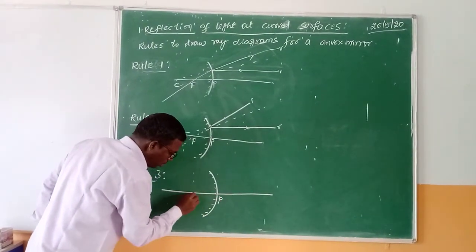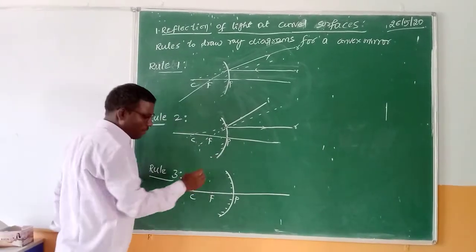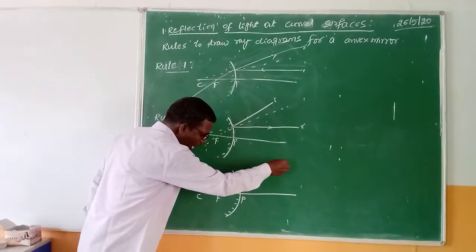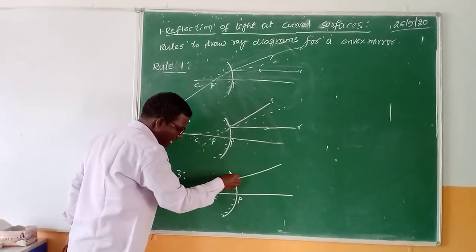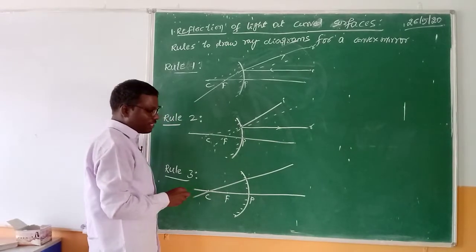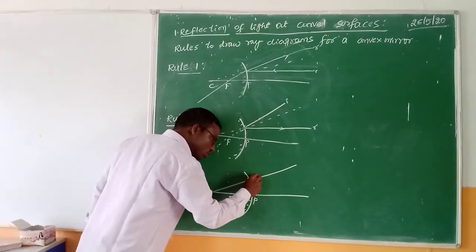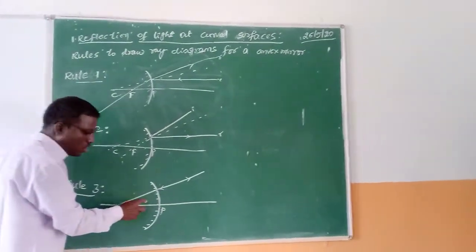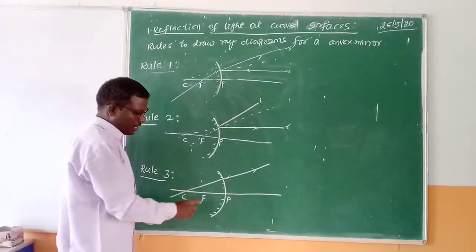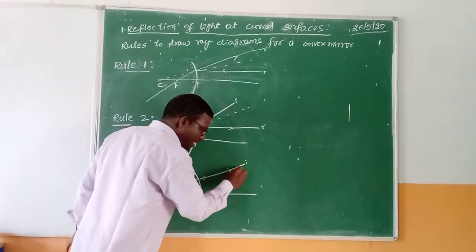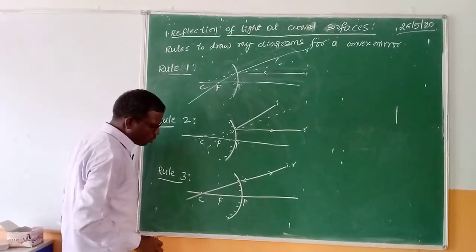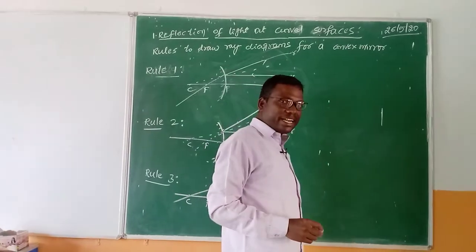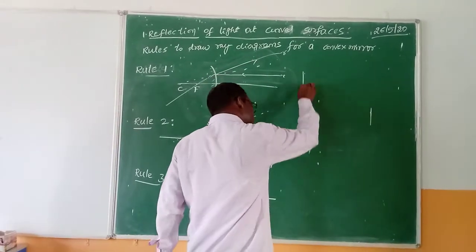Now Rule 3. In Rule 3, let us remember that it is a convex mirror. Draw the principal axis and represent the pole, focus, and center of curvature. In this rule, the light ray which is getting incident will travel toward the center of curvature. As you know, the light ray which passes through the center of curvature again gets reflected back from the mirror and passes through the center of curvature. There is no deviation in the light path — it is only the incident and the reflected ray. This is Rule 3.